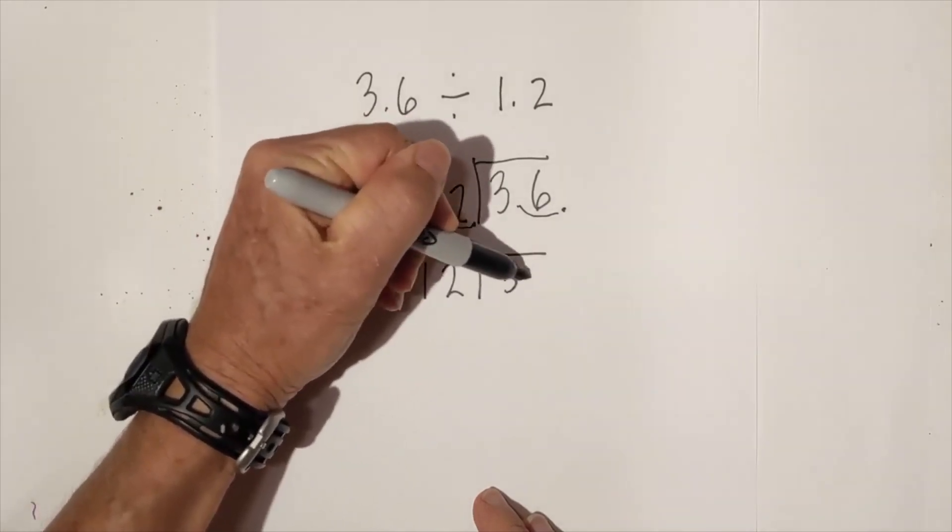I'm going to ask myself, is this number a whole number? No. So I can move the decimal place one to the right. And I'll do the same on the inside. So let me rewrite it. So now we have twelve divided by thirty-six and the decimal point is right there. So I'm going to move it straight up.